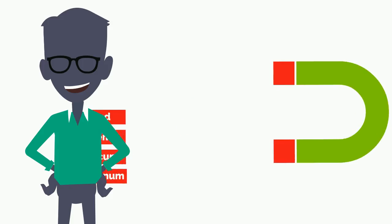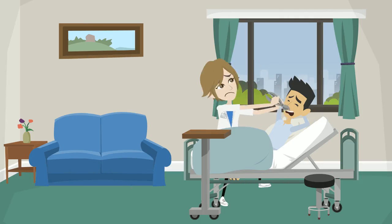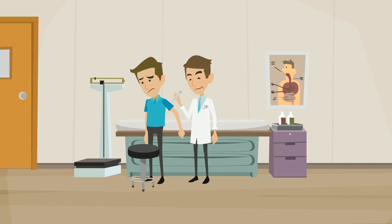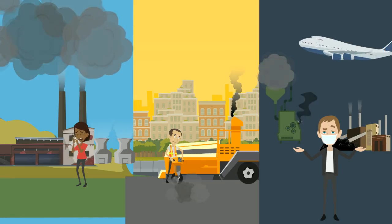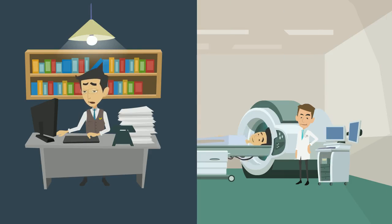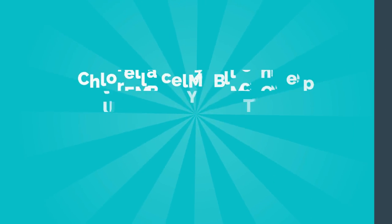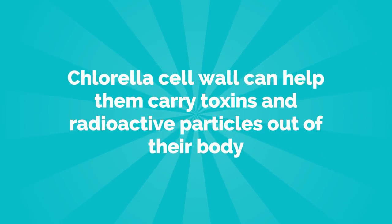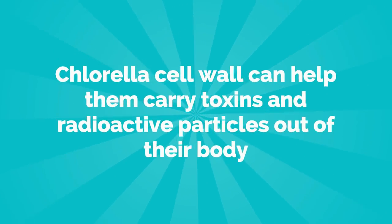First, chlorella cell wall has the remarkable capacity to bind with toxins and carry them out of the body. For people who have mercury fillings in their teeth, have been vaccinated, eat fish regularly, are exposed to pollution, or had radiation therapy or chemotherapy, chlorella cell wall can help carry toxins and radioactive particles out of their body.